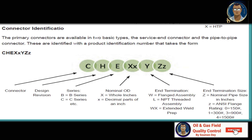For end termination: if W, it is for flanged assembly; if L, that means NPT thread assembly; if WX, this is extended well preparation. The last digit is end termination size — capital Z is for the nominal pipe size in inches; small z is for ANSI flange rating, which can be 0 for 150 pound, 1 for 300 pound, 3 for 900 pound, and 4 for 1500 pound. This was the RTP product identification system.